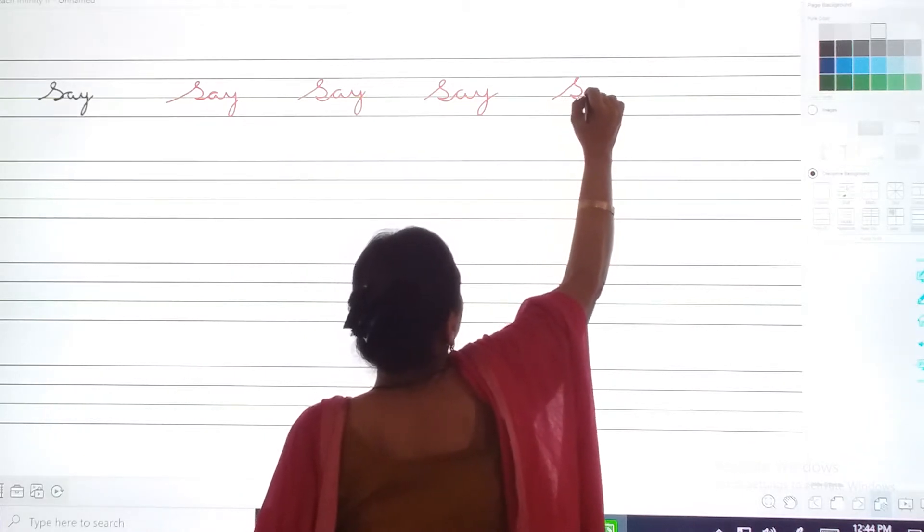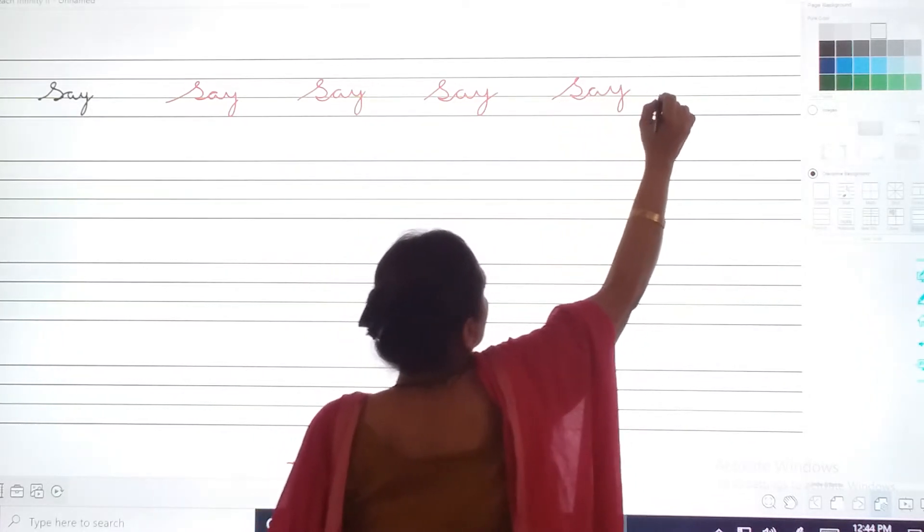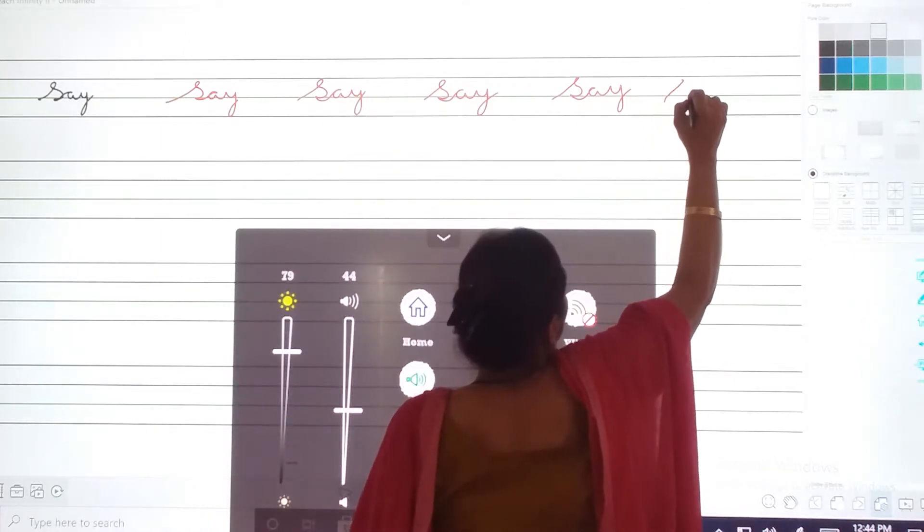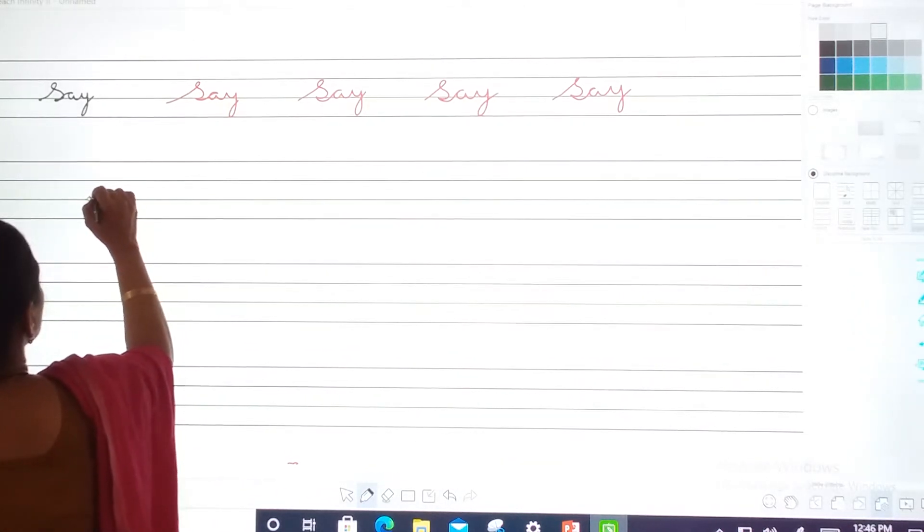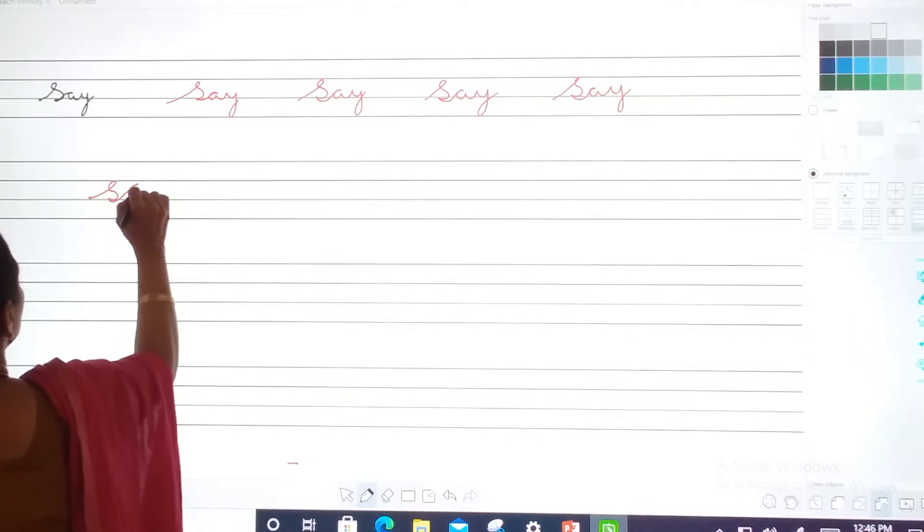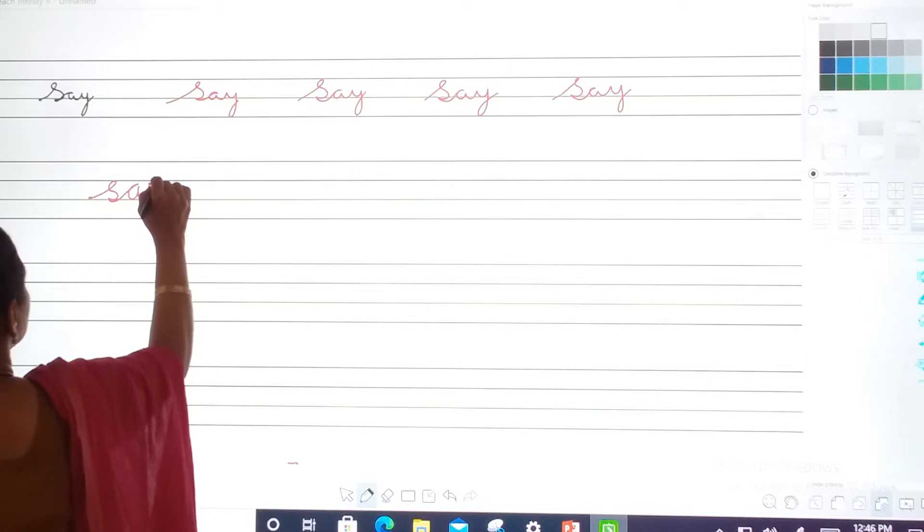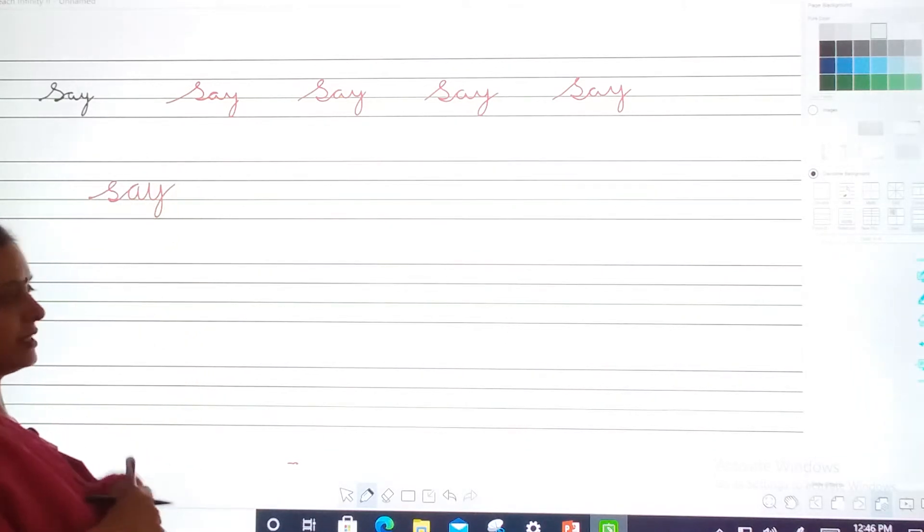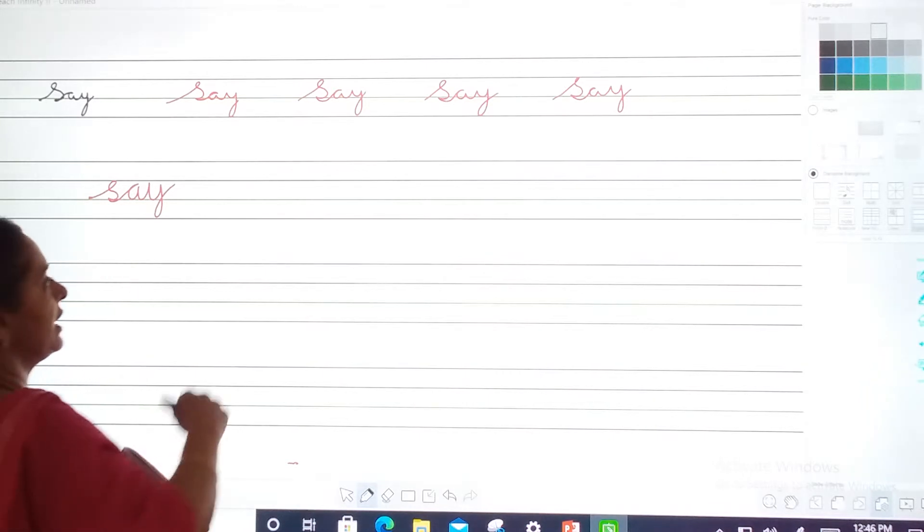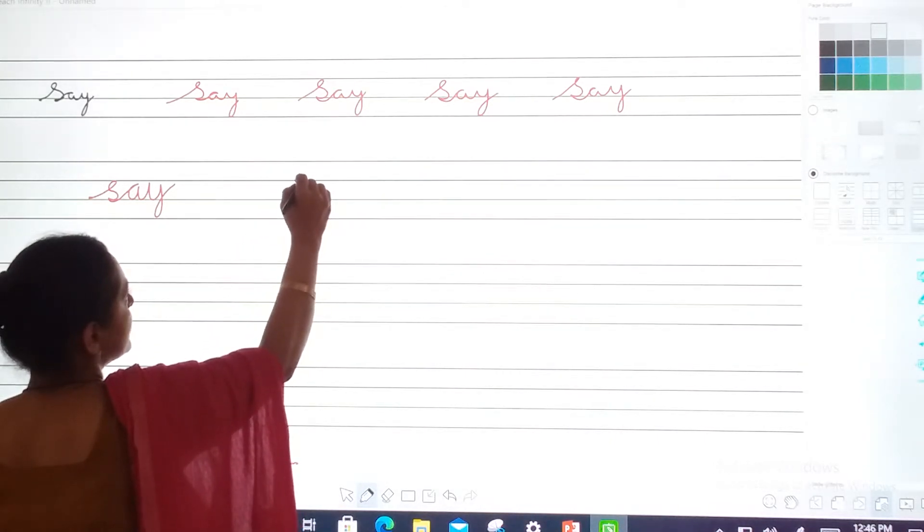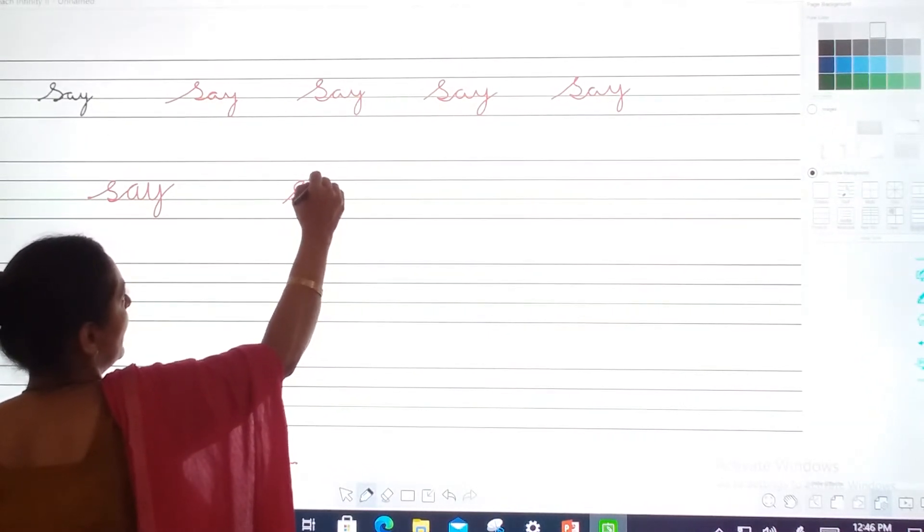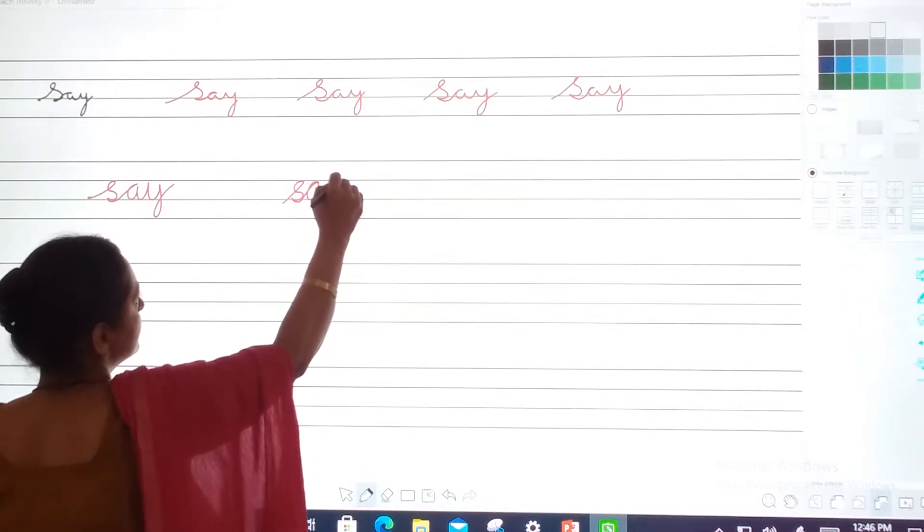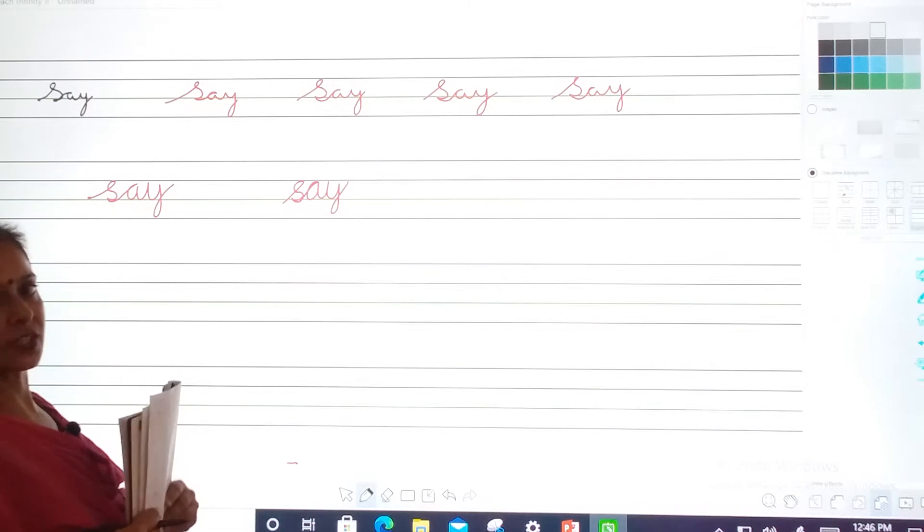S, A, Y. S, A, Y. Let's try again. See how you have to write? S, A, Y. Say. Again, dhekho beta. S, say. Okay, this is called say.